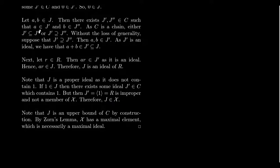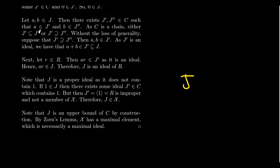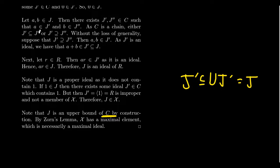Since J is a proper ideal and by construction every J' ⊆ J, J is an upper bound for the chain C. This was an arbitrary chain, so every chain in X has an upper bound. By Zorn's Lemma, X has a maximal element — which is a maximal element with respect to set containment and must be a proper ideal. That's exactly what a maximal ideal is. Therefore, by Zorn's Lemma, every ring with unity has a maximal ideal, and in particular this maximal ideal contains I.